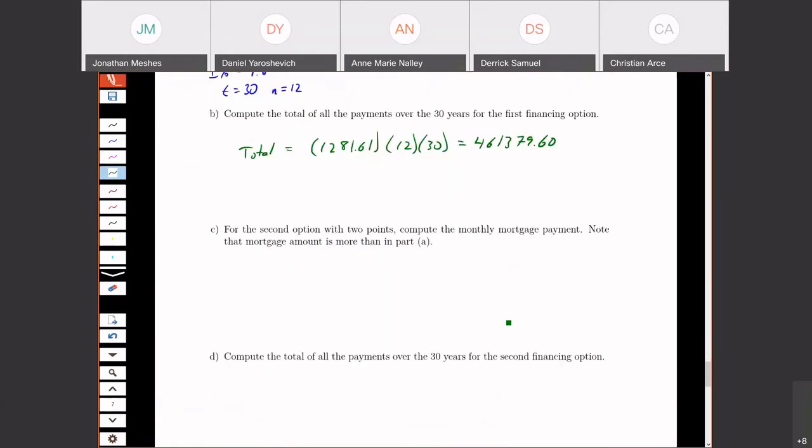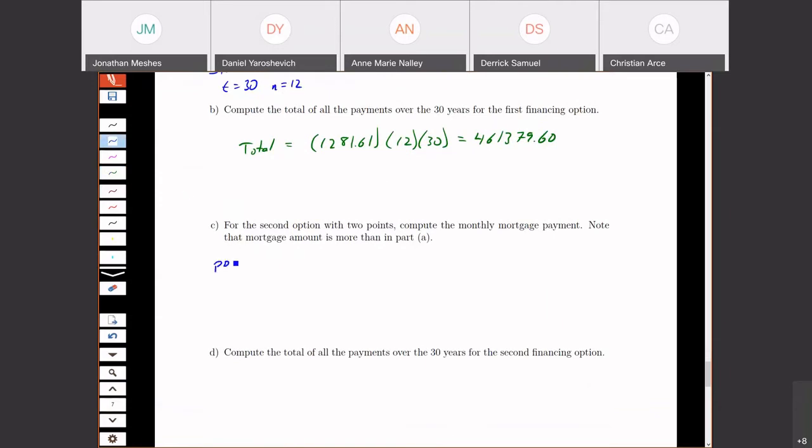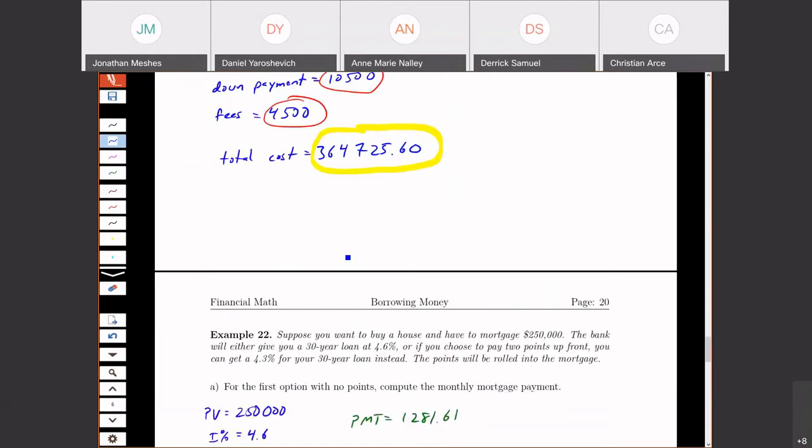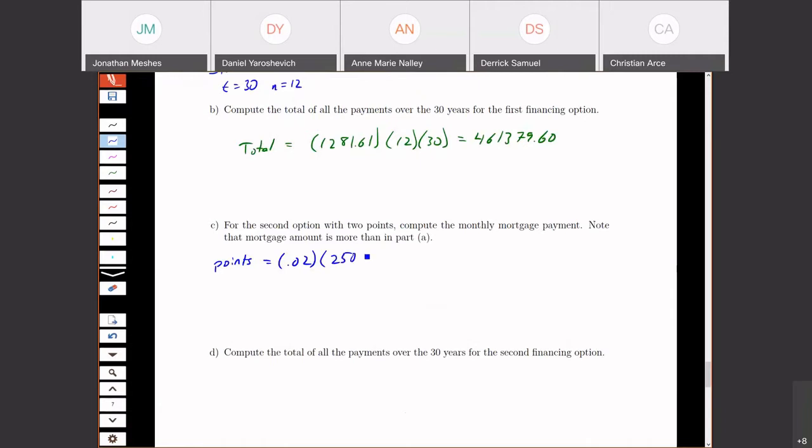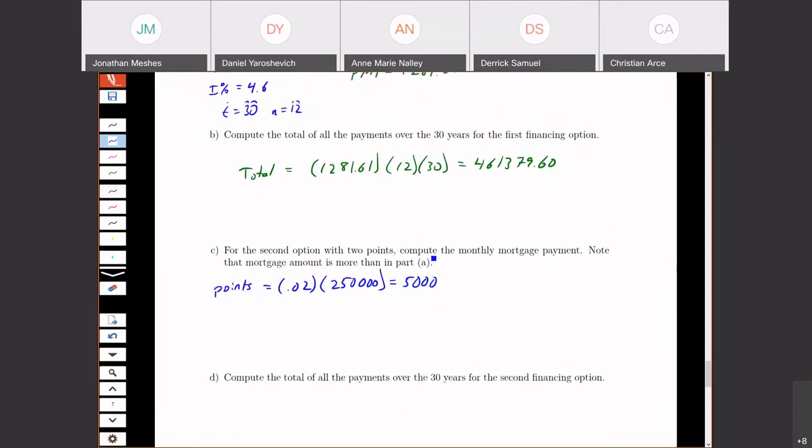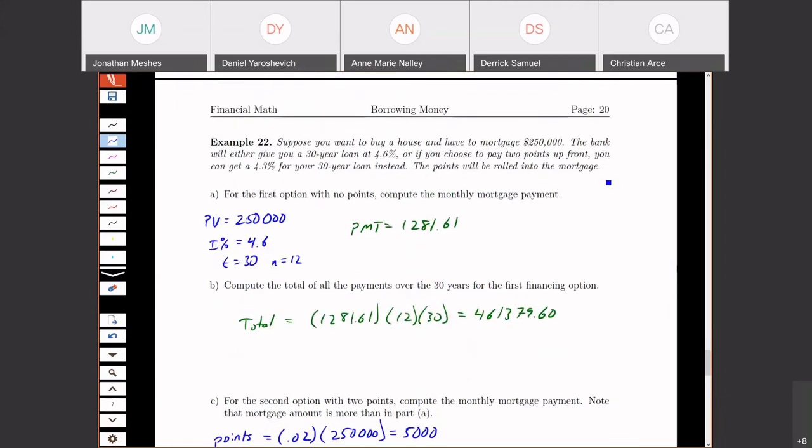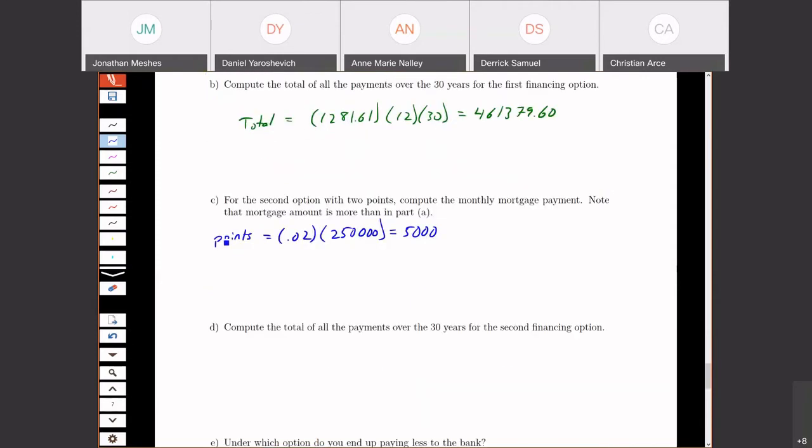Now let's look at the second option with two points. So let's first compute the points. It's two points, so that's 2% of the amount of money that we're borrowing. If I'm mortgaging or borrowing the $250,000, I'm paying 2% of $250,000. That's $5,000. The points are going to be rolled into the mortgage, so we're going to borrow the money for our points as well. So my mortgage amount is the $250,000 plus the $5,000 in points. I'm borrowing $255,000.